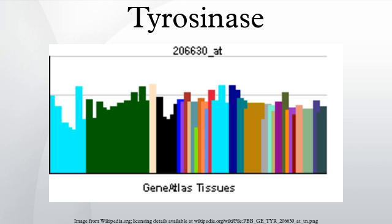It is found inside melanosomes, which are synthesized in the skin melanocytes. In humans, the tyrosinase enzyme is encoded by the TYR gene.